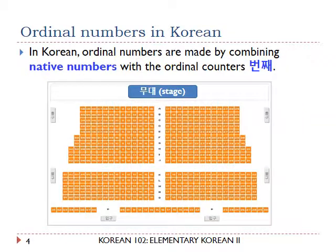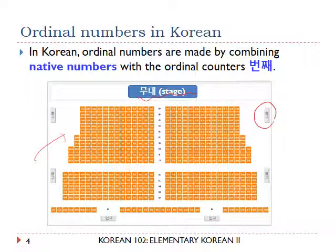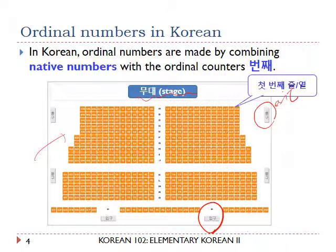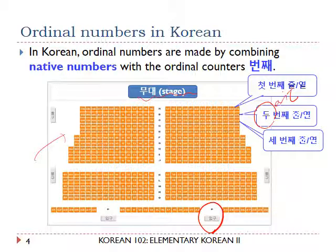Another example: you see the seat map of a theater. There is a 무대 (stage) at the front with many seats. 출구 is an exit, and 입구 means entrance. The first row — 한국말로 — 첫 번째 줄 means 'row' or 'line,' and you can also say 열. So 첫 번째 열 and 첫 번째 줄 are both okay. The second row: 두 번째 줄, 두 번째 열. The third row: 세 번째 줄, 세 번째 열.